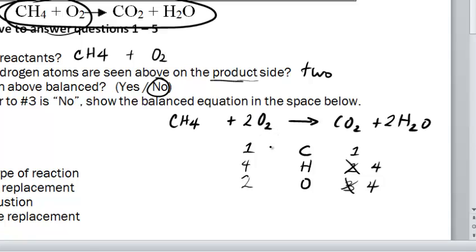But that's easily accomplished. Whenever you have a single element by itself, that's a pretty easy fix. So I'm going to double that up now to four. And now all my numbers are consistent. Now we have a balanced reaction.